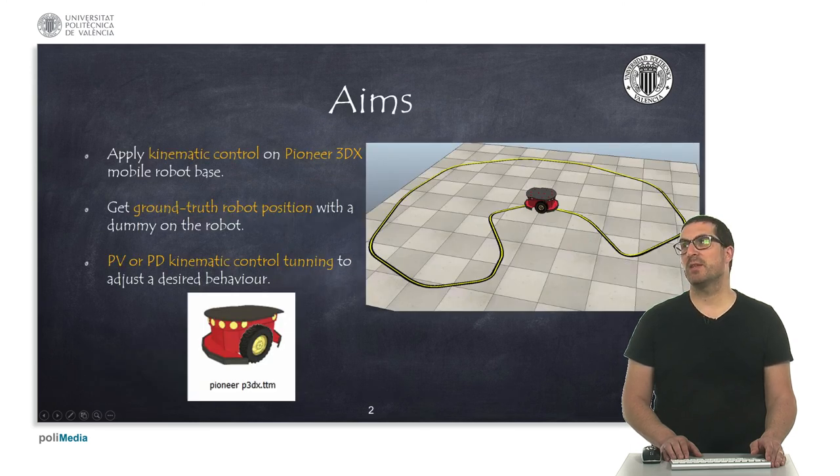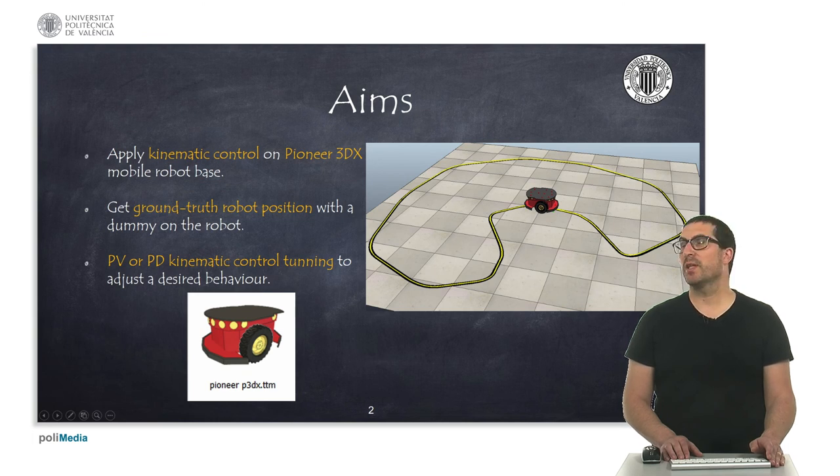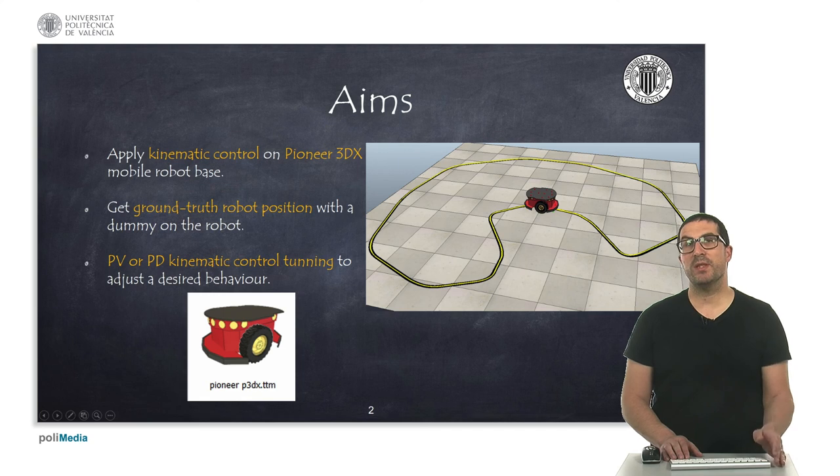The aim of this presentation is to implement PV proportional velocity or PD proportional derivative kinematic control using a Pioneer 3DX robot. This is a robot that is included in CoppeliaSim inside the mobile folder of the model browser. So, search for it.